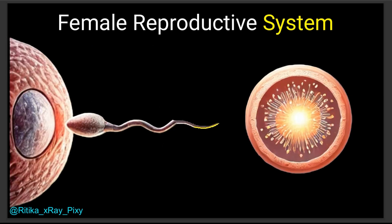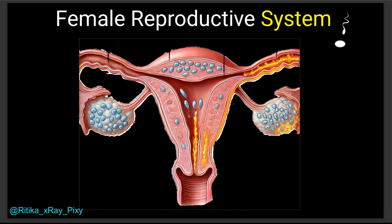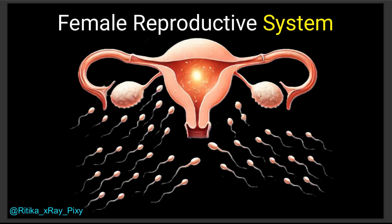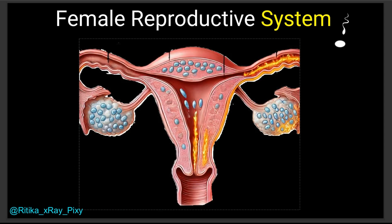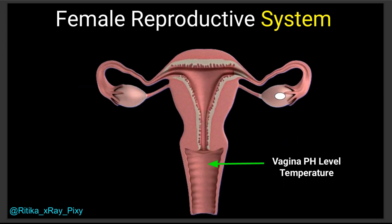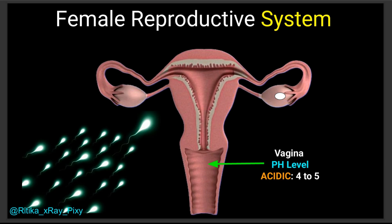Only one lucky sperm reaches and fertilizes the egg because the female reproductive system is a challenging place. Only a few strong and healthy sperm reach the fallopian tube; most sperm die or get trapped in the cervix or uterus. The vaginal pH level and temperature also play a major role in sperm survival. The vaginal pH is naturally acidic, around 4 to 5, which can affect sperm motility and viability.